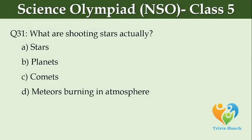What are shooting stars actually? Option A, stars. Option B, planets. Option C, comets. Option D, meteors burning in the atmosphere.